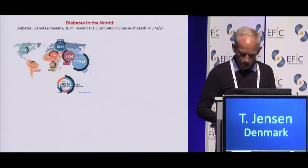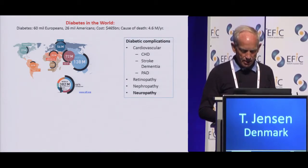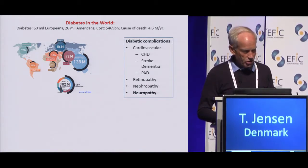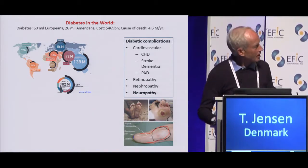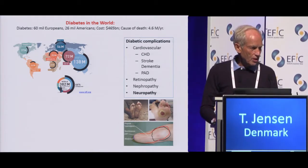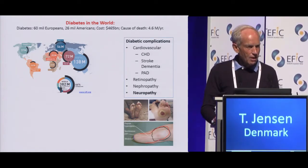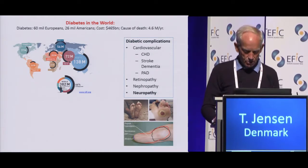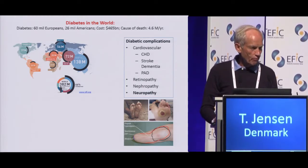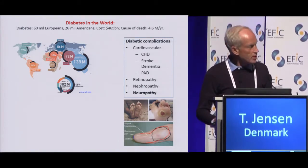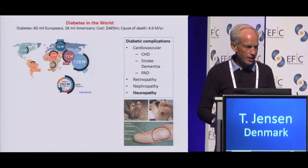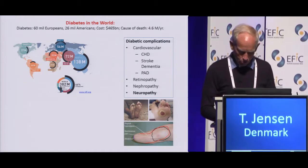These neuropathies come in many variants. The most common is the distal symmetric polyneuropathy, which is a length-dependent polyneuropathy. But there are also other types that are far more rare — plexopathies, radiculopathies, mononeuropathies, and visceral or autonomic neuropathies. The major problem, both in type 1 and type 2 diabetes, remains the distal symmetric polyneuropathy.